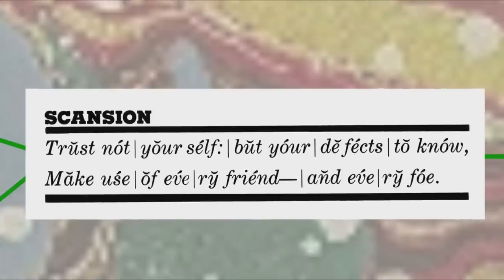so an iamb is a foot consisting of one unstressed syllable followed by one stressed syllable, such as the word because. And I should point out that a metrical foot does not need to correspond to individual words. Longer words might be made up of more than one foot, and short words might form only a part of a foot.